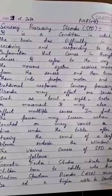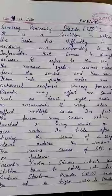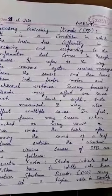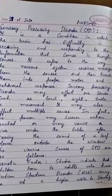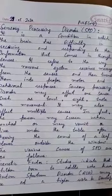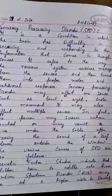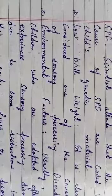The various causes of sensory processing disorder are as follows. The first cause is genetic factors. Studies indicate that children born to adults who have autism spectrum disorder, or ASD, may be at a higher risk of developing sensory processing disorder. Scientists suggest that the causes of SPD are coded in a child's genetic material.